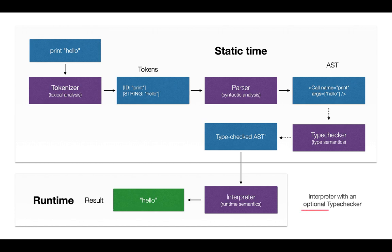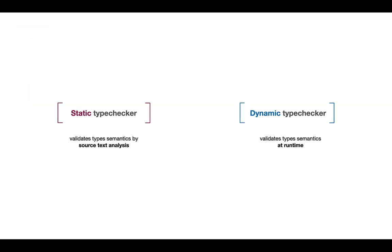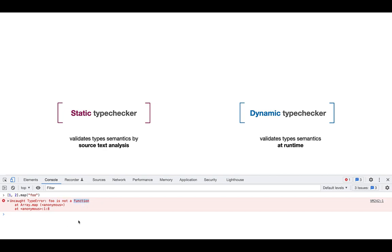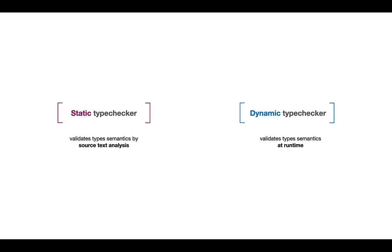This is the picture of the interpreter with an optional type checker — optional because the type checker can be implemented as an extra module for an already existing programming language. An example is TypeScript added on top of JavaScript, or the Flow type checker for JavaScript. From this perspective we separate type checkers into static and dynamic. The static type checker works with the source text and the AST without access to the runtime. Many dynamic programming languages have a dynamic type checker, checking arguments or operations at runtime — which hurts performance, since you run infrastructure code validating types instead of useful code.